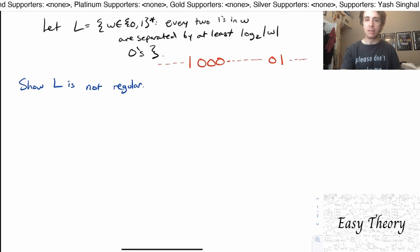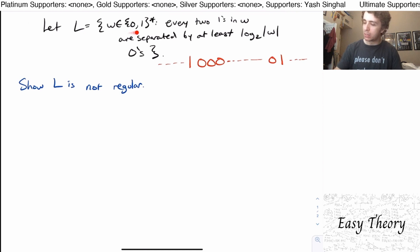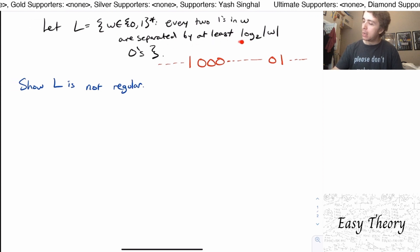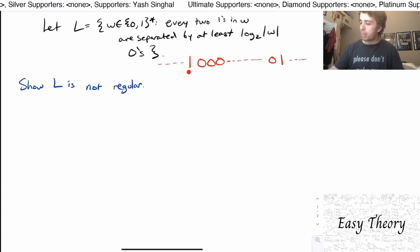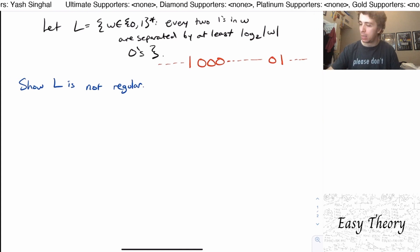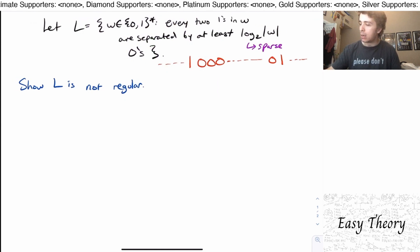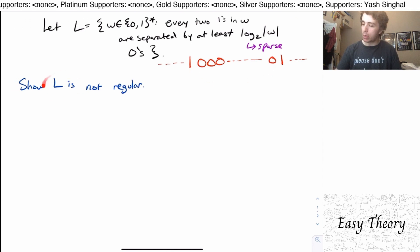Hello and welcome back to another edition of Easy Theory. Today we're going to be looking at the language L of all strings of the form {0,1}* such that every two ones in w are separated by at least log of the length of the string number of zeros. In other words, every pair of consecutive ones is separated by a lot of zeros compared to the length — we can't have two ones that are really close to each other. Another term for this is called sparse. What we want to show is that L is not regular.